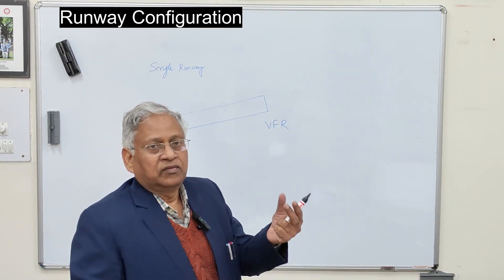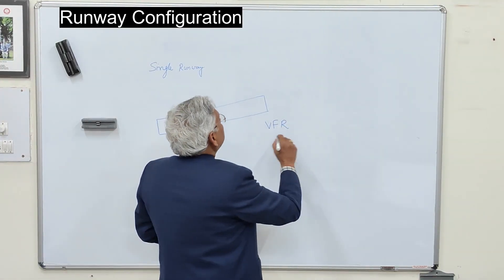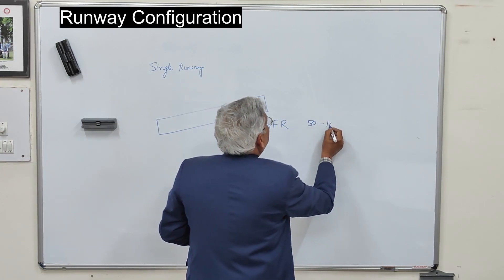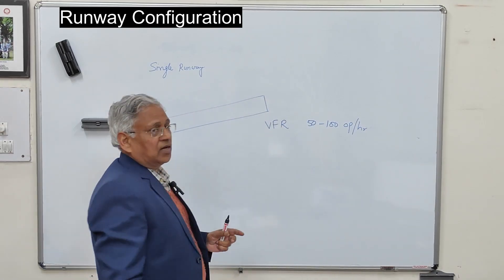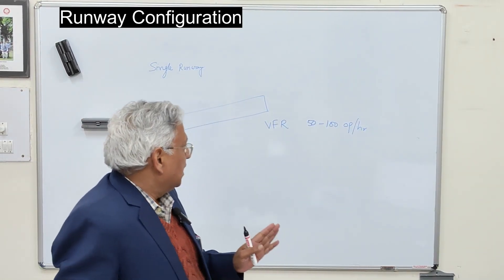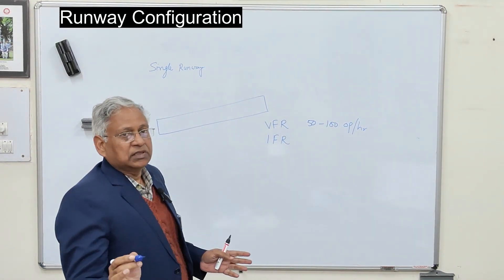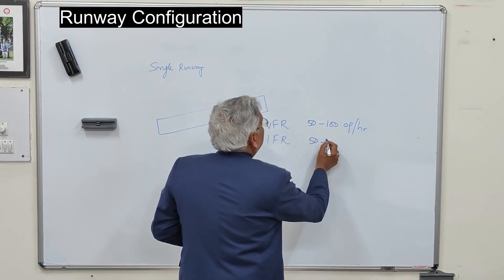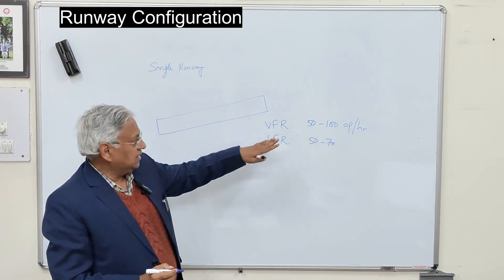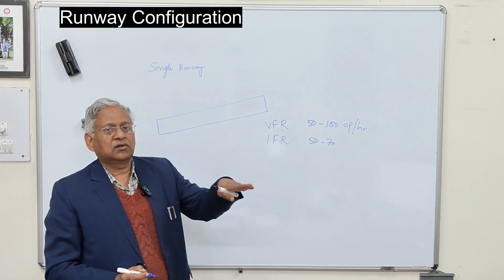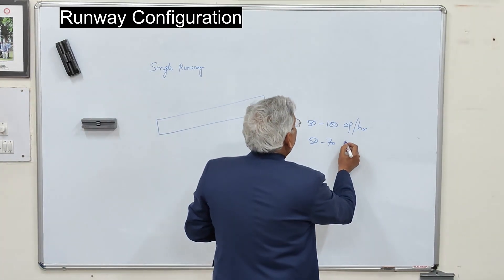Under VFR conditions, the basic rule of flight is 'see and avoid.' A single runway can accommodate 50 to 100 operations per hour — landing and takeoff are considered two different operations. Under IFR conditions (instrumental flight rules), where flights are completely in control of the air traffic control tower, this reduces to 50 to 70 operations per hour.